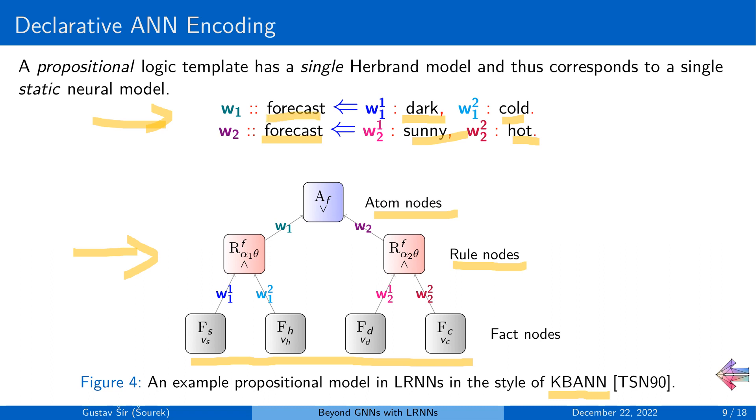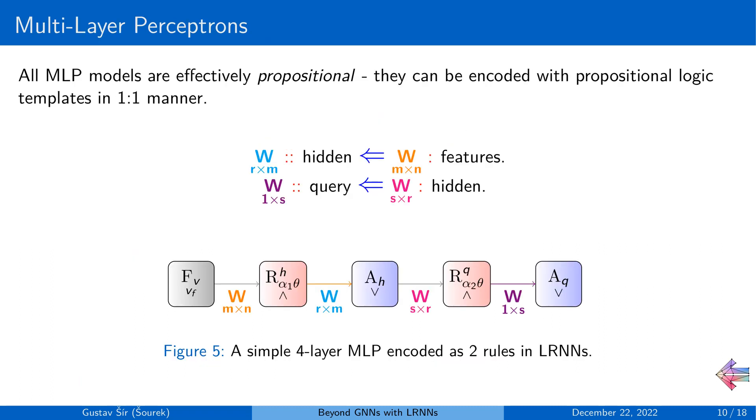And then finally, the weights from the rules are directly mapped to the corresponding connections in the network, similarly to the Markov logic networks. Now, the thing with feed-forward neural networks, or MLPs for short, is that these are inherently propositional.